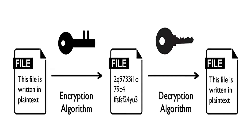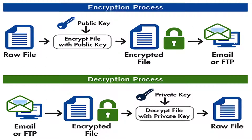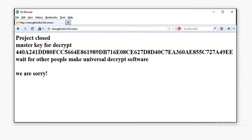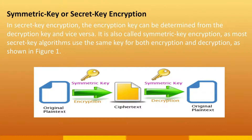In most cases two analogous functions are employed, one for encryption and the other for decryption. With most modern cryptography, the ability to keep encrypted information hidden is not based on the cryptographic algorithm, which is widely known, but on a number called a key that must be used with the algorithm to produce an encrypted result or to decrypt previously encrypted information. Decryption with the correct key is simple and easy. Decryption without the correct key is very difficult and in some cases practically impossible.